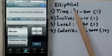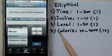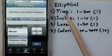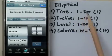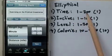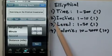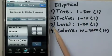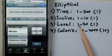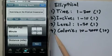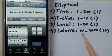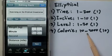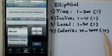The type is going to be called elliptical. It's going to have four data wheels. The first one is time, with numbers from 1 to 200, increments of 1. The second wheel is incline, 1 to 10, increments of 1. Third wheel is level, 1 to 20, increments of 1. And fourth wheel is calorie, from 10 to 2,000, increments of 10.